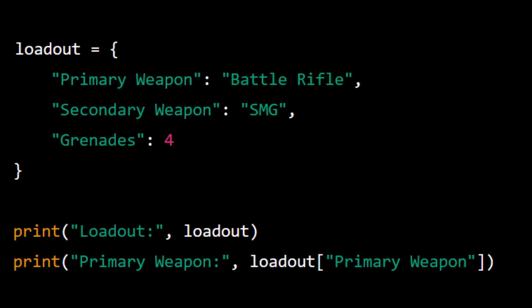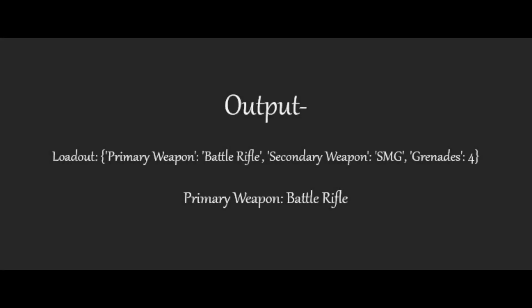Final example: loadout = {"primary weapon": "battle rifle", "secondary weapon": "SMG", "grenades": 4}. print("Loadout", loadout). print("Primary weapon", loadout["primary weapon"]).